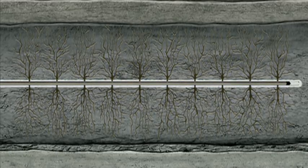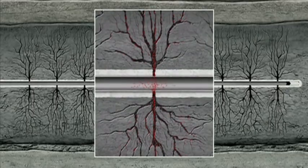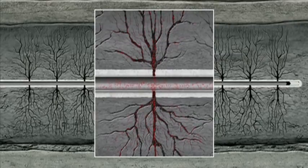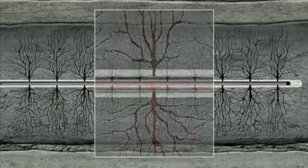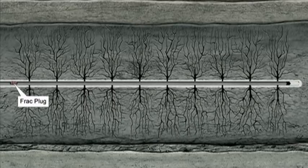This requires water, proppant like sand, and additives to be pumped into the well bore under high pressure to the point where holes have just been made into the rock formation. The mixture is forced out through the perforations and onto the surrounding rock where it should fracture in the shale.